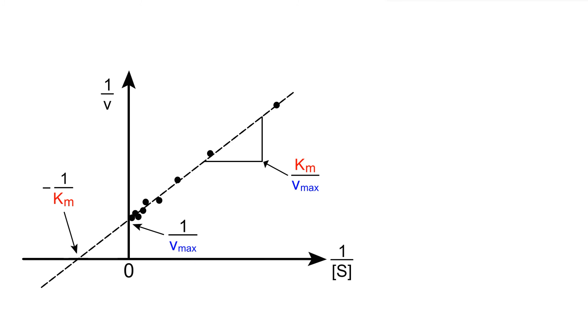As you can see here, the y-intercept is equivalent to 1 over Vmax, and we can also see how the x-intercept is equivalent to minus 1 over Km.